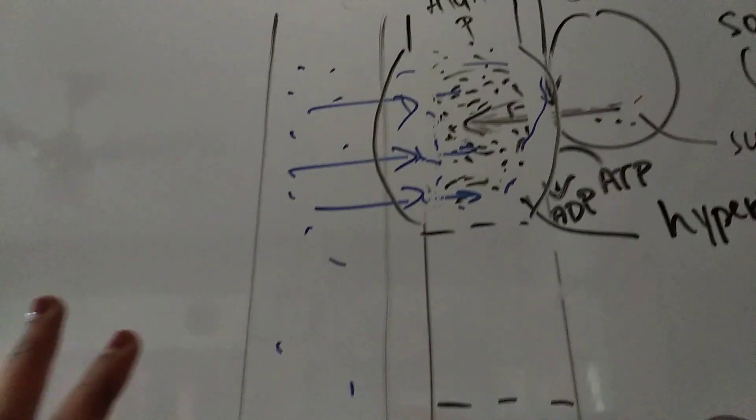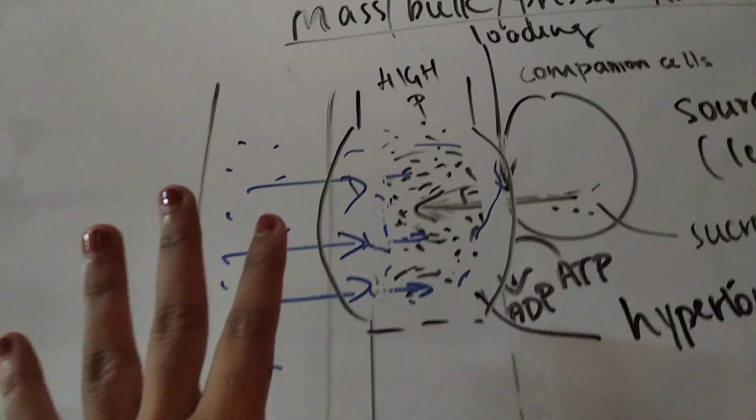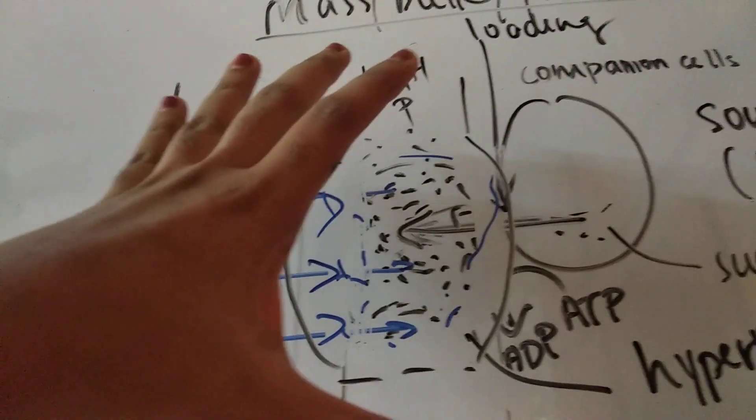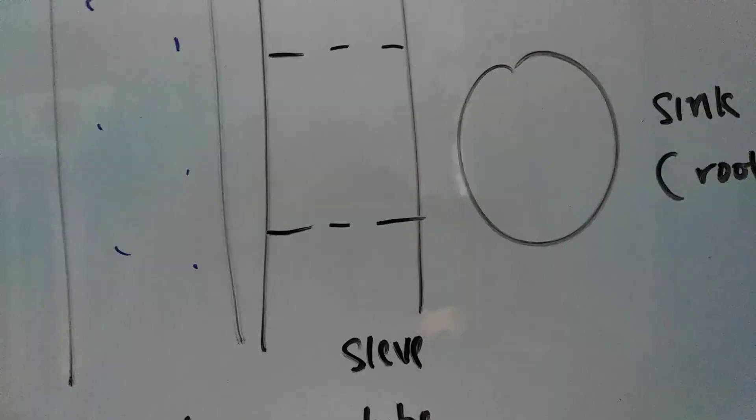Xylem only gives water when it's a very hypertonic solution. So this place is not exactly hypertonic and this place is very hypertonic. So now this is a very high pressure region and this is a low pressure region.